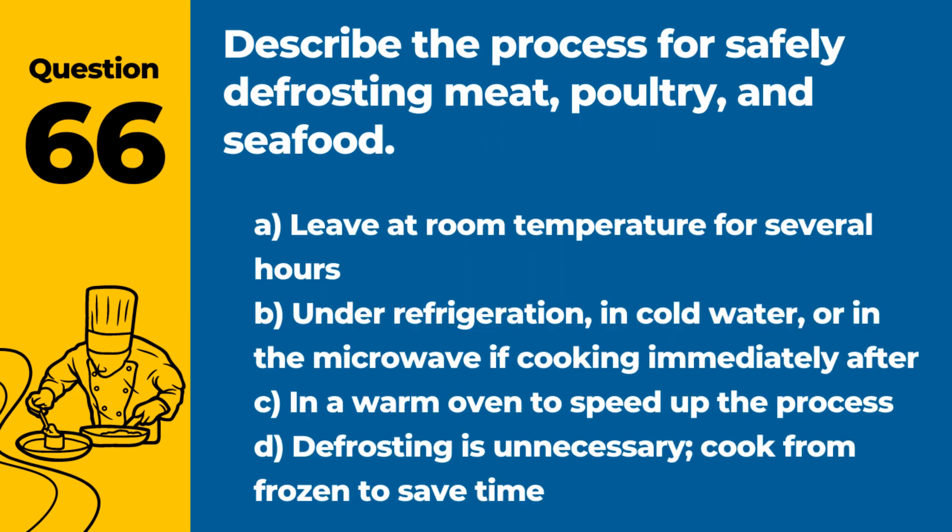Question 66. Describe the process for safely defrosting meat, poultry, and seafood. Answer: B. Under refrigeration, in cold water, or in the microwave if cooking immediately after. These methods ensure that the food is kept at safe temperatures during thawing.